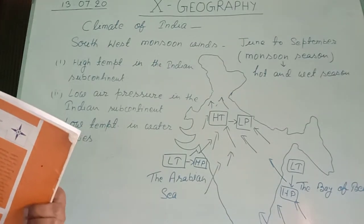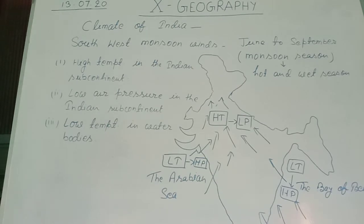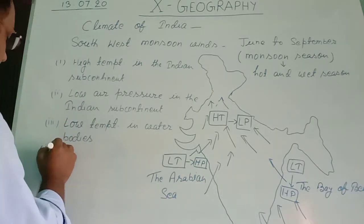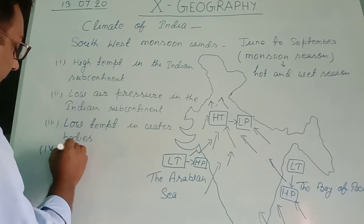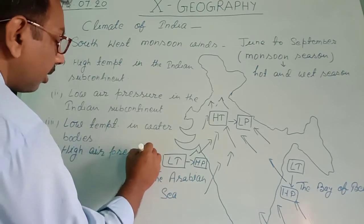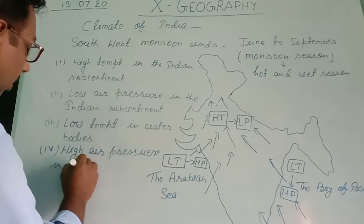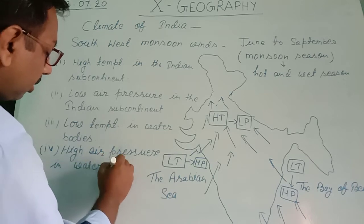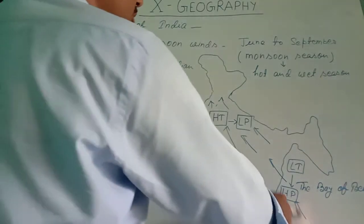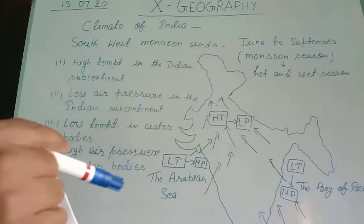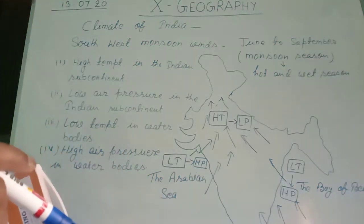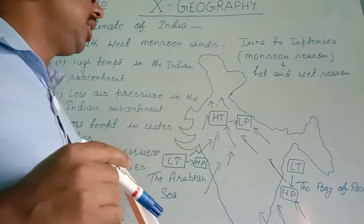This temperature difference leads to air pressure difference. Where there is high temperature there is low air pressure, and where there is low temperature, air pressure is high. So feature four: low temperature and high air pressure in the water bodies. On the basis of these features, winds start blowing from the water bodies to the Indian subcontinent from both sides — these are the monsoon winds, laden with moisture, which rain over the Indian subcontinent after condensation.